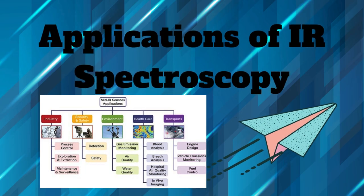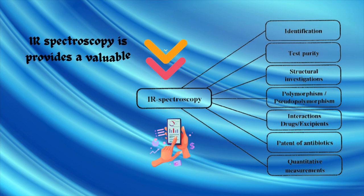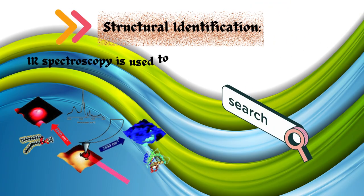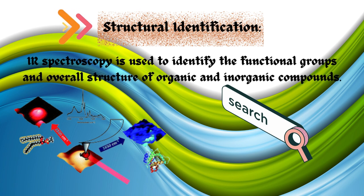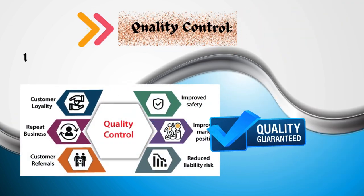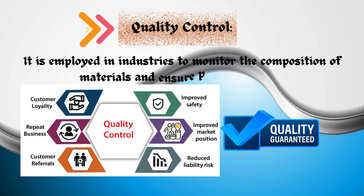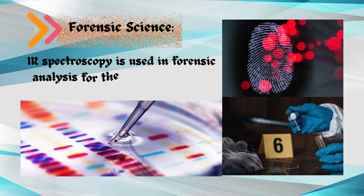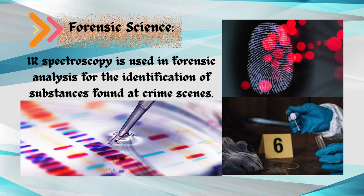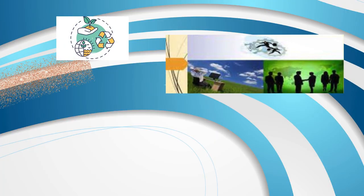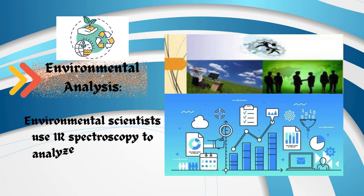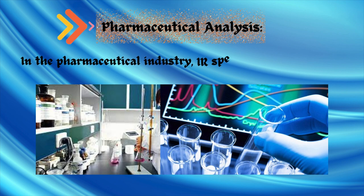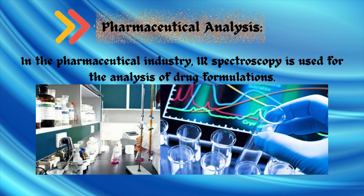Applications of IR spectroscopy. IR spectroscopy provides a valuable tool for the identification and characterization of organic and inorganic compounds. Structural identification: IR spectroscopy is used to identify the functional groups and overall structure of organic and inorganic compounds. Quality control: it is employed in industries to monitor the composition of materials and ensure product quality. Forensic science: IR spectroscopy is used in forensic analysis for the identification of substances found at crime scenes. Environmental analysis: environmental scientists use IR spectroscopy to analyze air and water samples for pollutants. Pharmaceutical analysis: in the pharmaceutical industry, IR spectroscopy is used for the analysis of drug formulations.